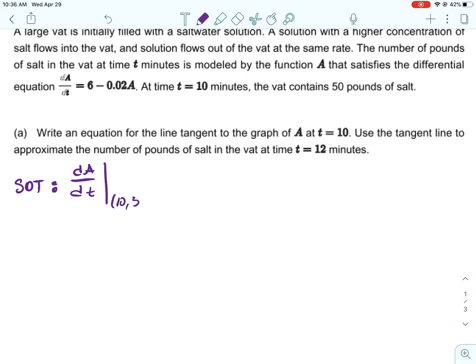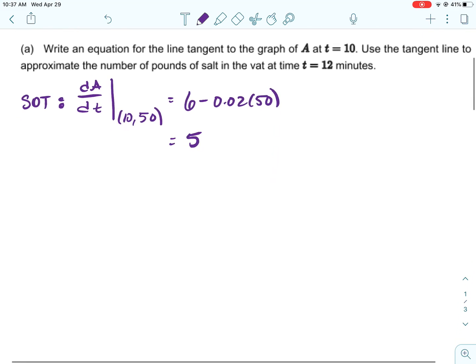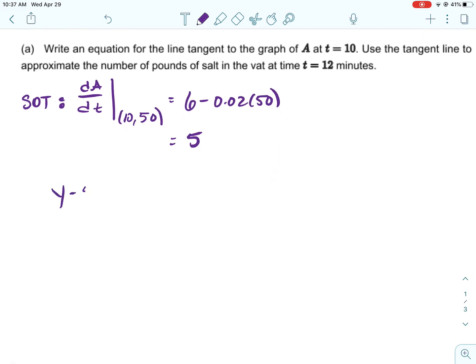So to get our slope, if we're given a differential equation, we use that differential equation. Our point at 10 is given to you in the problem: 50 pounds of salt at 10 minutes. So I will take our differential equation and A is the 50, the amount of salt. So I will put that in. And I'm going to get a slope of 5.